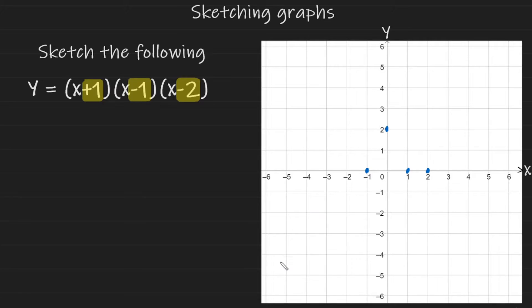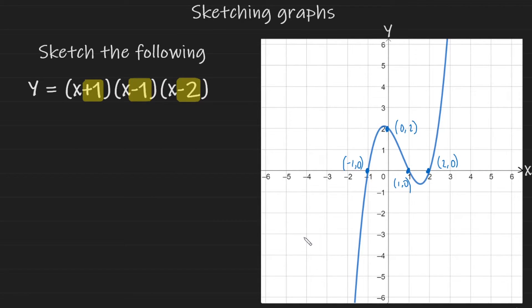Remember from the previous example the cubic graph comes from the bottom left-hand corner and leaves in the top right-hand corner. The cubic intercepts the first root at minus 1, cuts the y-axis at 0 and 2, goes down and cuts the second root where x is 1, dips down and comes back up to cut the final root where x is 2, then carries on going up. These are all key features of the cubic.